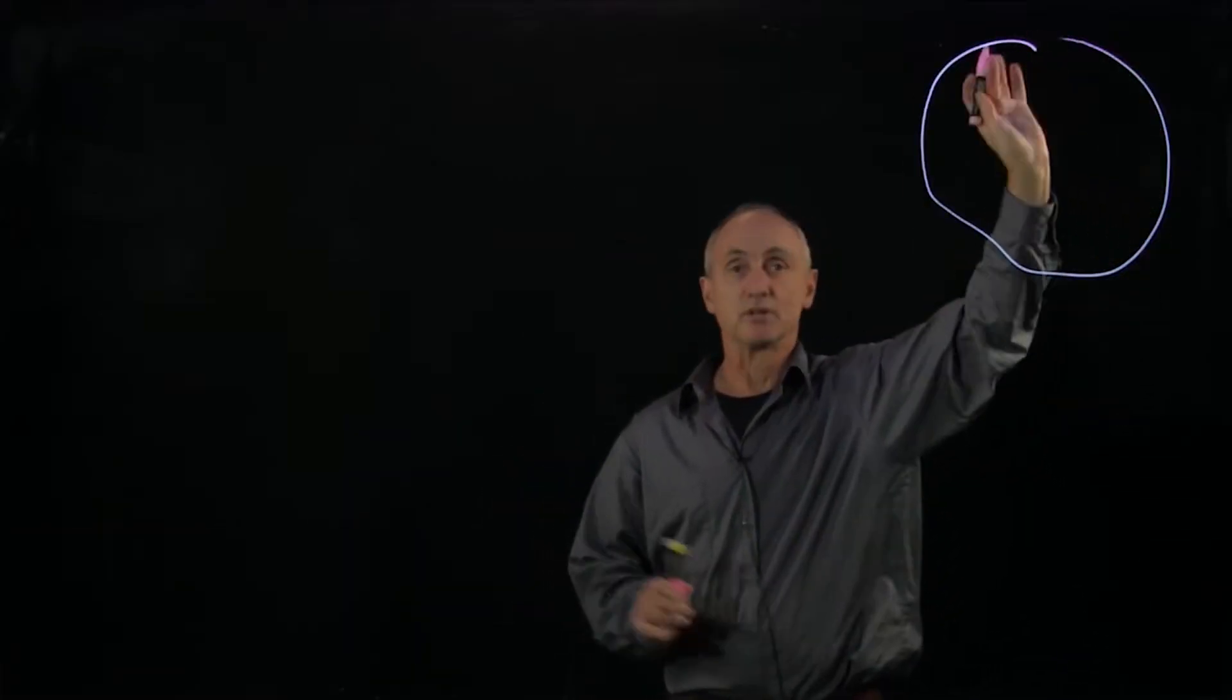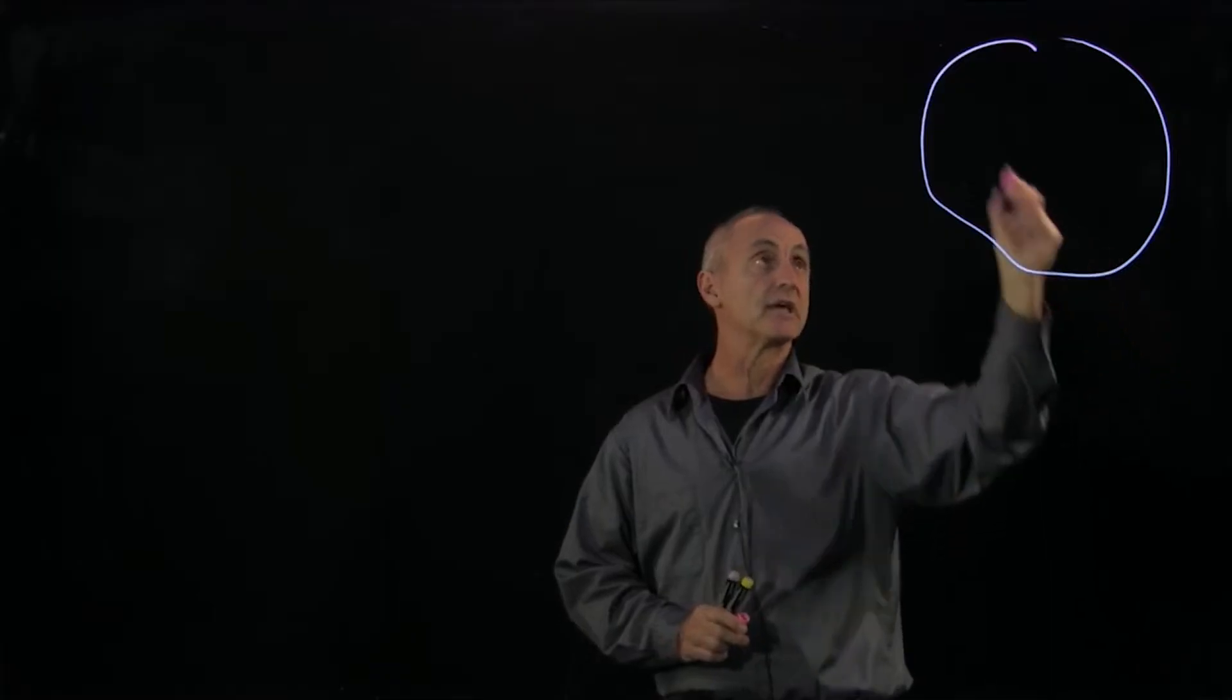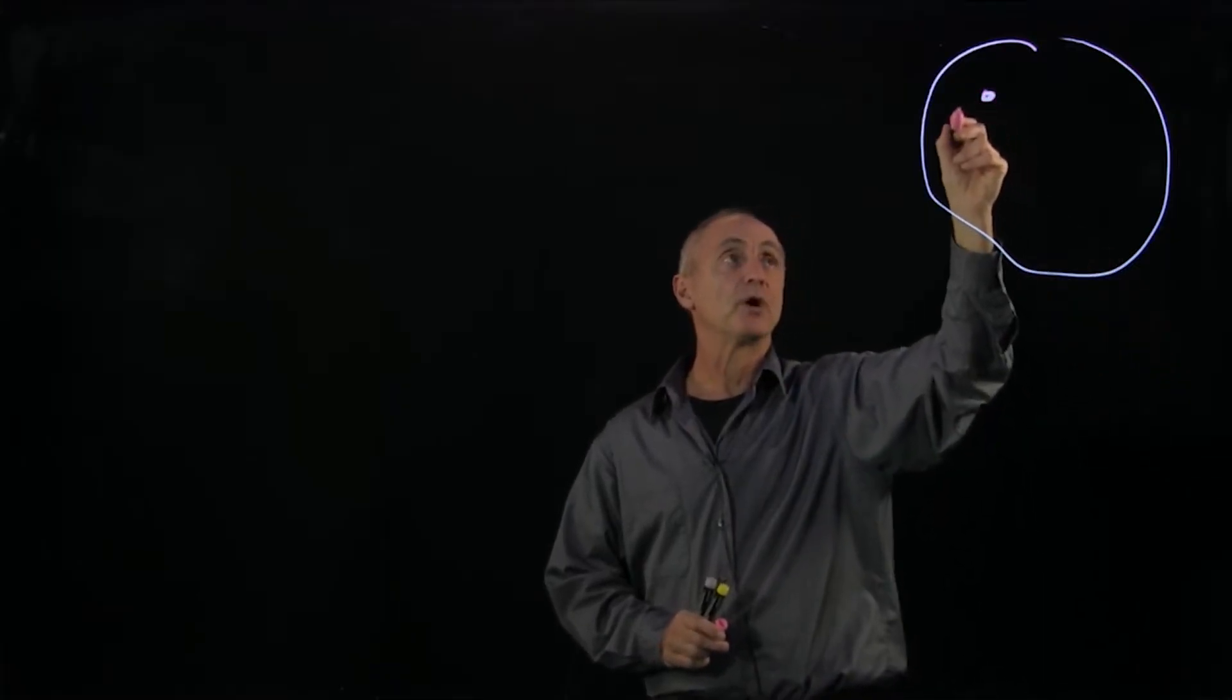I'd now like to talk about the velocity of the center of mass for a system of particles. So let's take a system, which I'll just outline by this. And in that system, we have a bunch of particles.